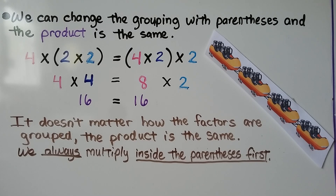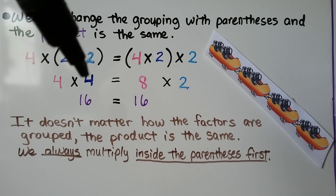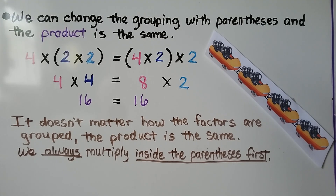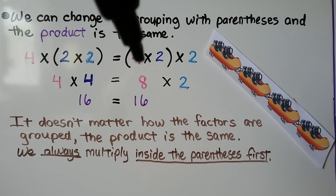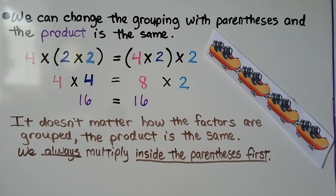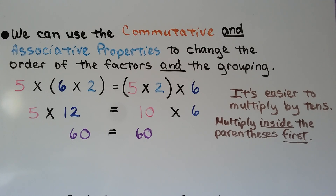We can change the grouping with parentheses and the product is the same. We can group 2 times 2 together to make 4; 4 times 4 is 16. We can group the 4 and the 2 together to make 8; 8 times 2 is also 16. It doesn't matter how the factors are grouped — the product is the same. We always multiply inside the parentheses first.